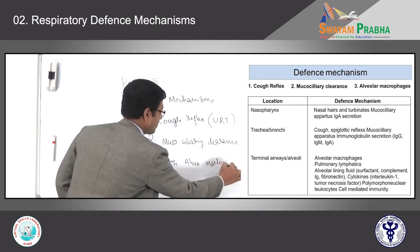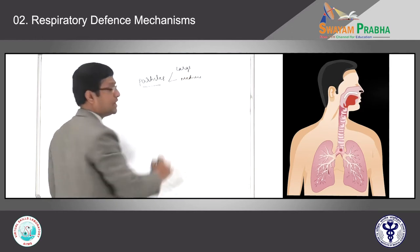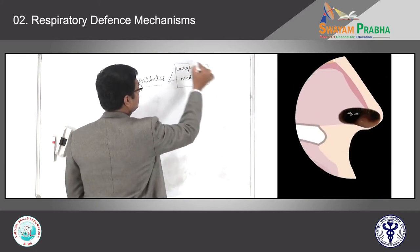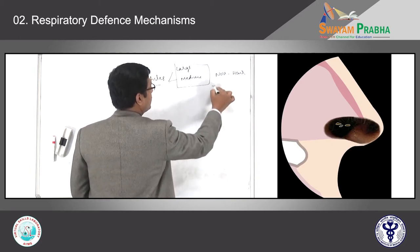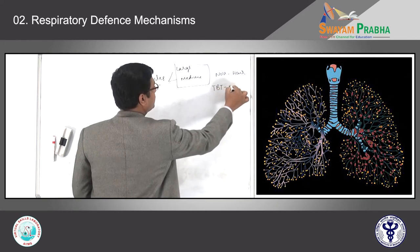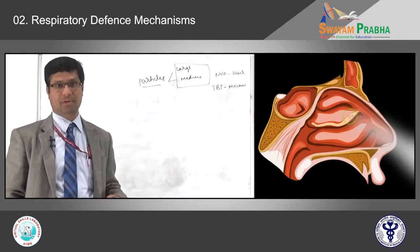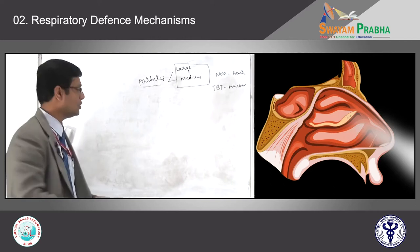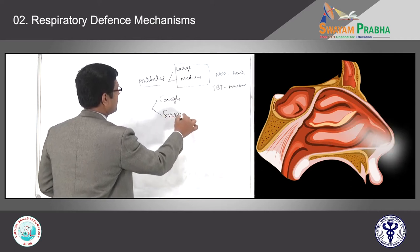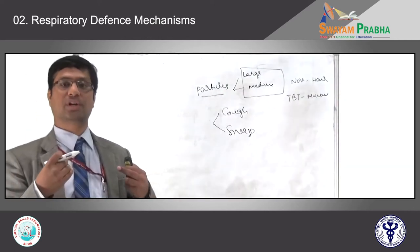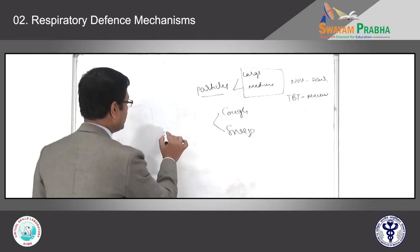Large particles and medium size particles predominantly get trapped in the nose by nasal hair structures and also in the tracheobronchial tree by mucus. Once these particles get trapped, they have to be thrown out of the body. So you will have a cough reflex and also sneezing. When you develop a cough or a sneeze, these particles will be thrown out. This is how the nose deals with these particles.